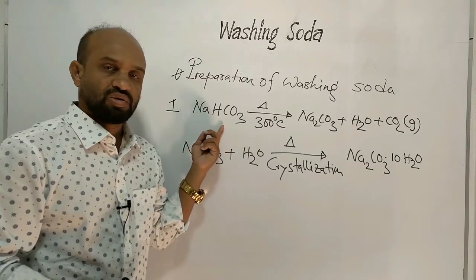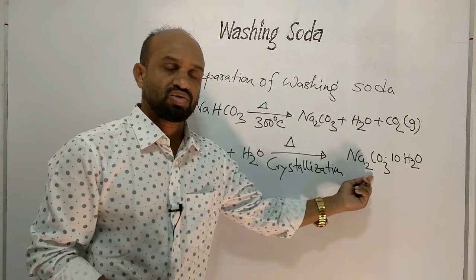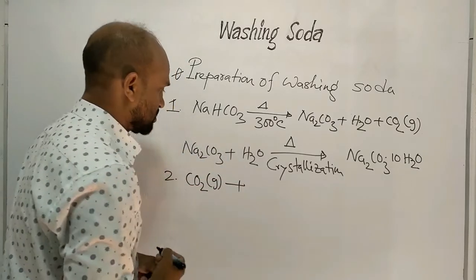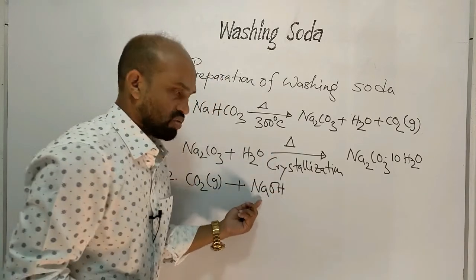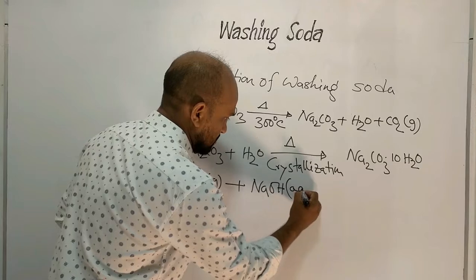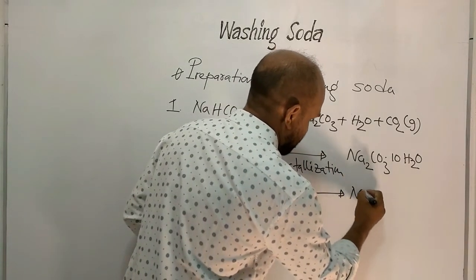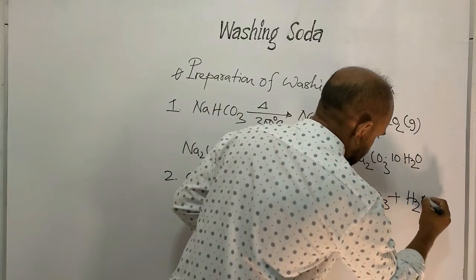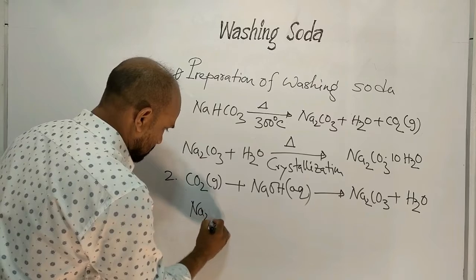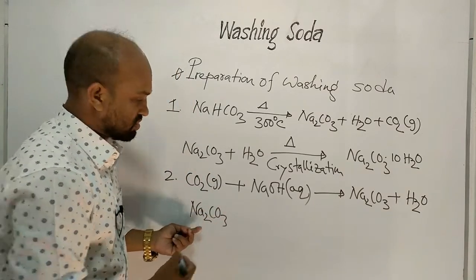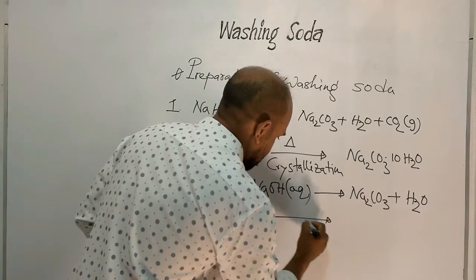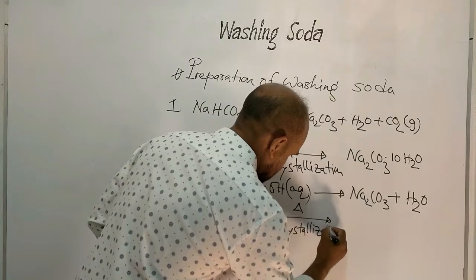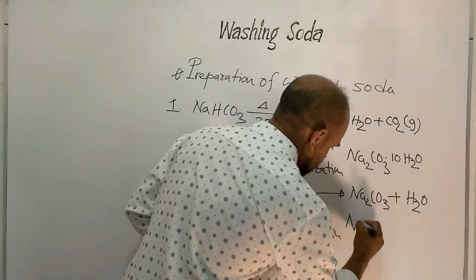When this sodium carbonate is added to water and heated, it undergoes crystallization and washing soda is formed. In the second method, when carbon dioxide gas is passed through a solution of caustic soda (sodium hydroxide), sodium carbonate is formed with water as a byproduct. When this sodium carbonate is added to water and heated, it again undergoes crystallization and washing soda is formed.